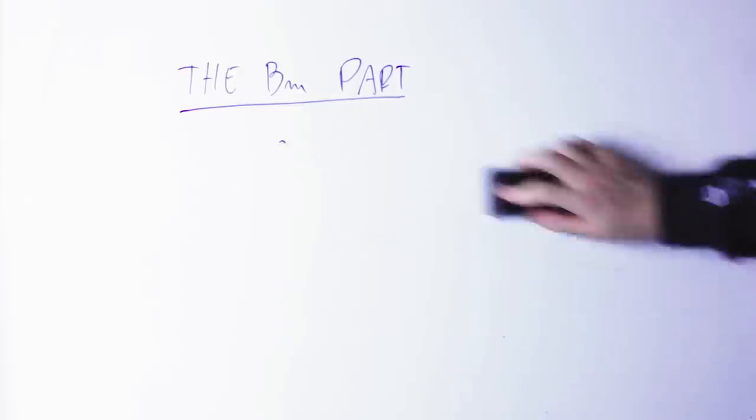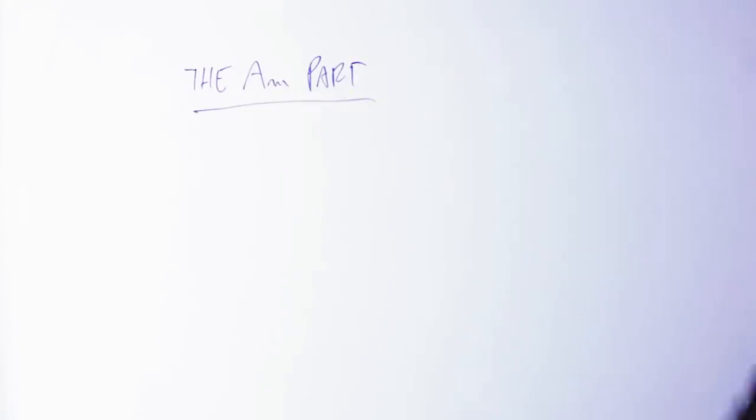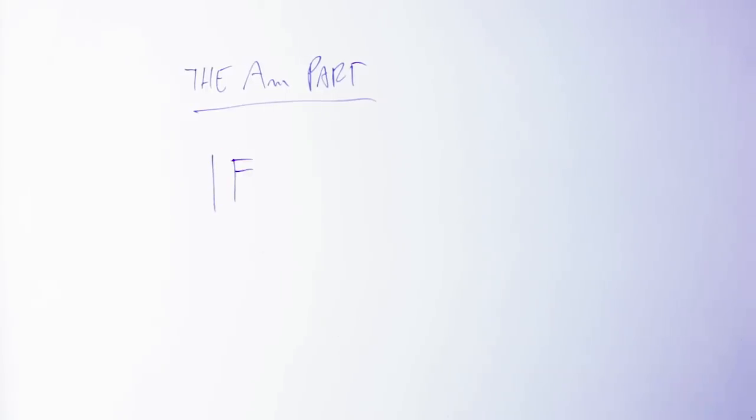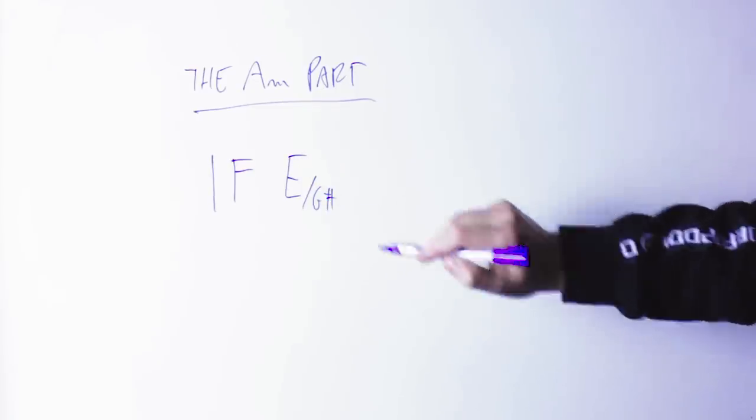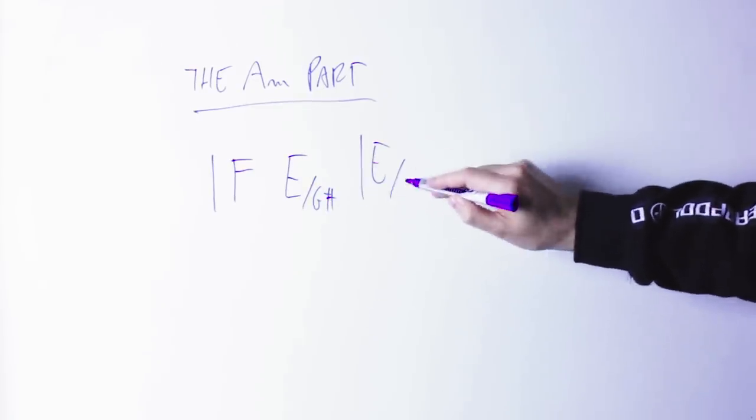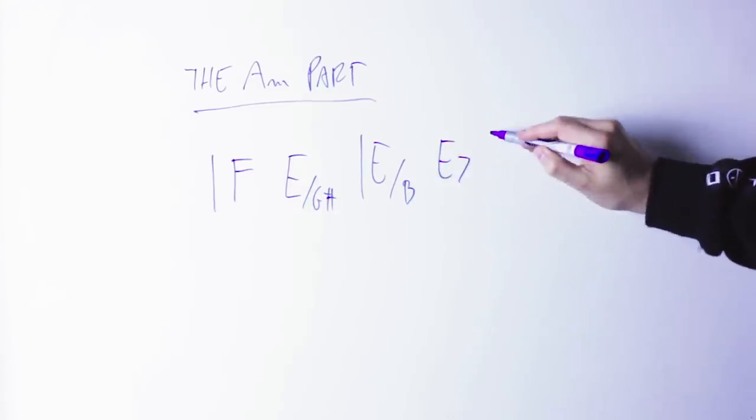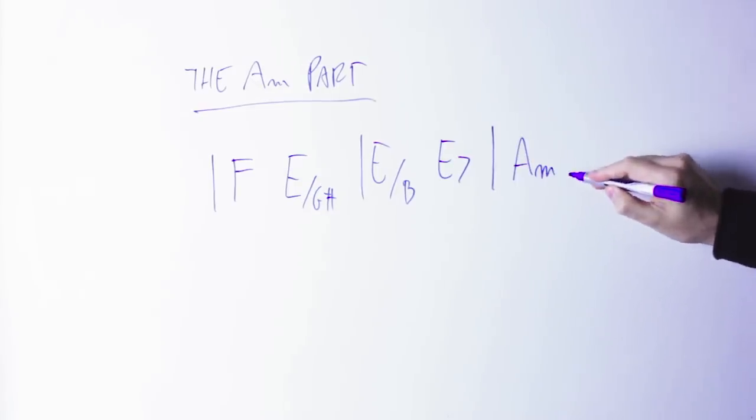Then at the end of the solo the harmony changes and we have this part. This new part begins with what we can classify as an F chord. Sure it's an F with no third and with a sixth but it's nevertheless an F chord and then it proceeds with an E with a bass of G sharp, an E with a bass of B, and then keeps going on in an E7 with a high note of D, then going into the A minor chord.